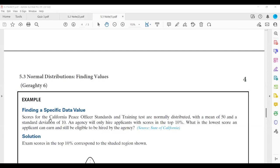So the score for the standard test is normally distributed. The mean of that test is 50 and the standard deviation is 10. The applicant to be considered for hire, they need to have scores in the top 10%. What is the lowest score that a person, an applicant, can earn and still be eligible to be hired by that agency? So we want to know what is the x-value. We have the mean, we have the standard deviation, and we want to know what is that x-value.